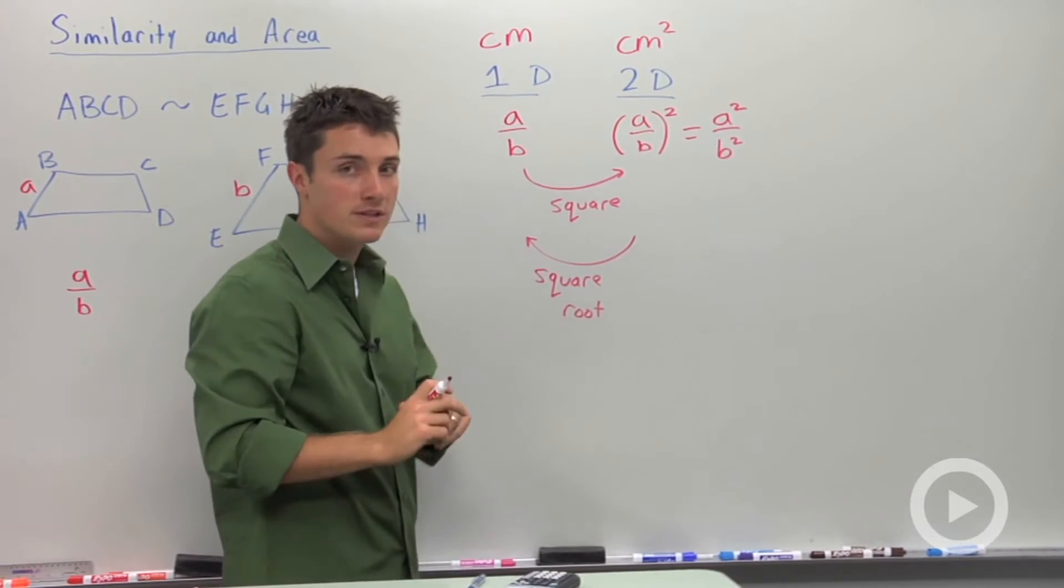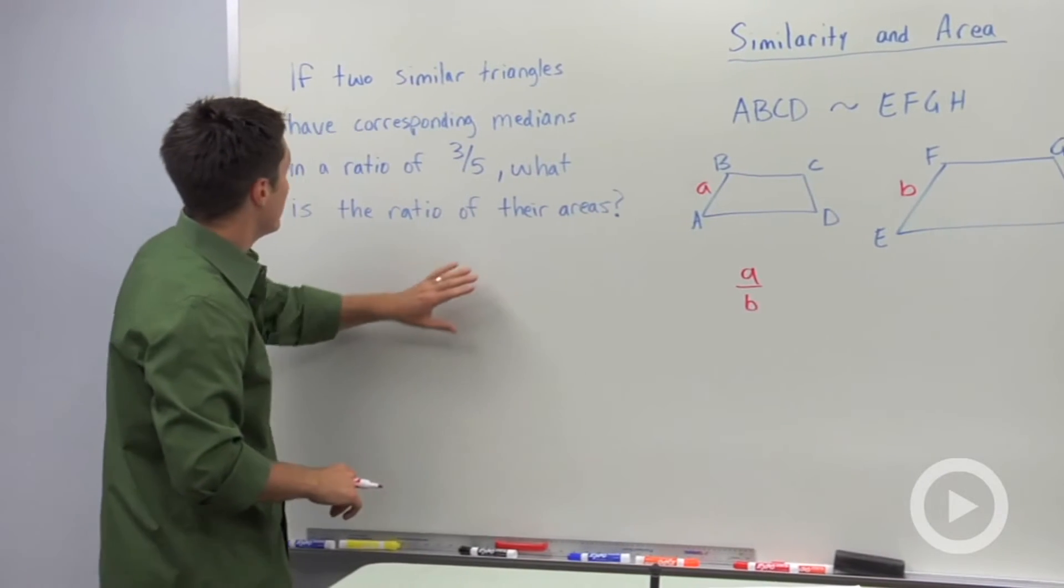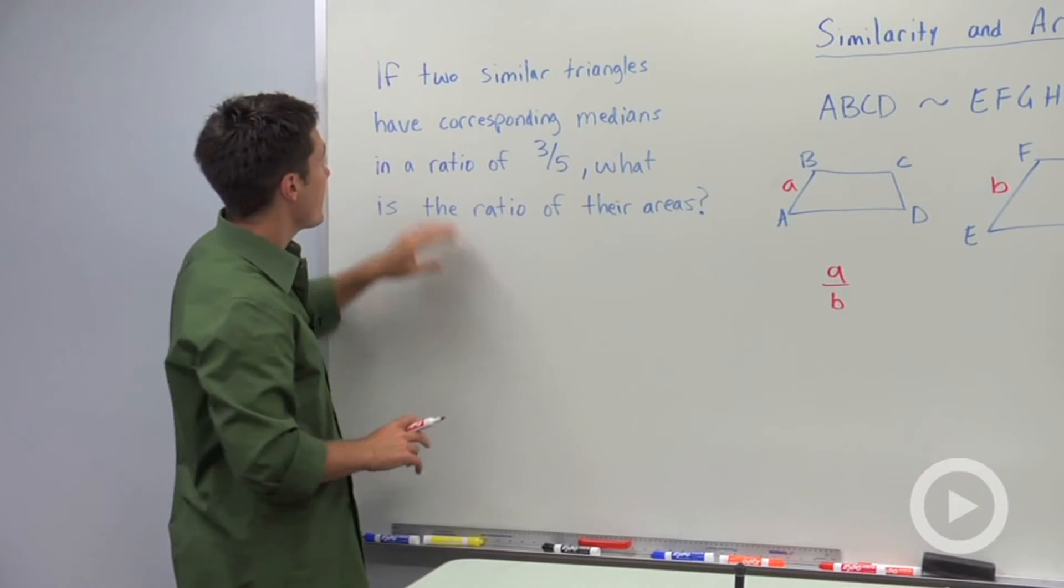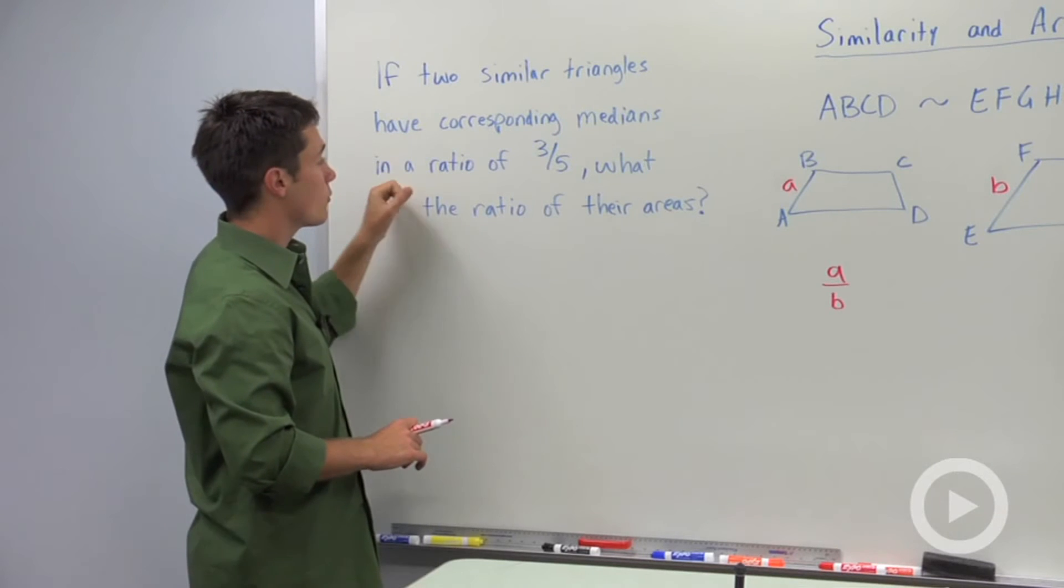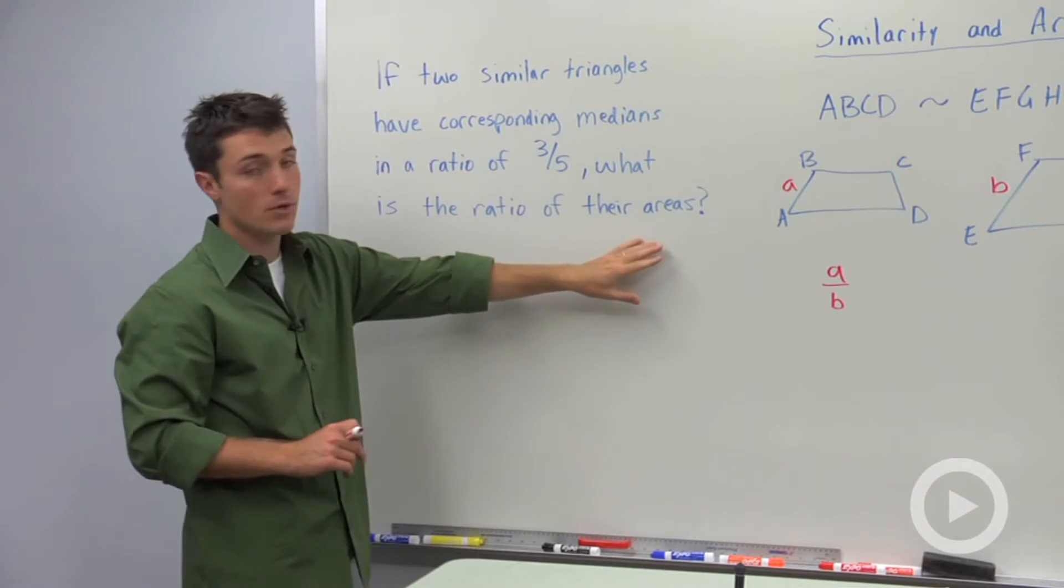Let's look at a brief example of how we can apply this. Here it says if two similar triangles have corresponding medians in a ratio of three to five, what is the ratio of their areas?